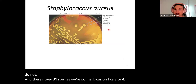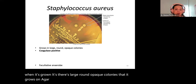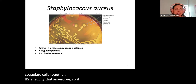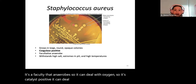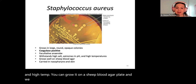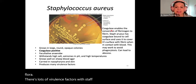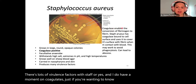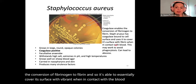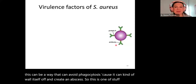Staph aureus is probably the most important staph species to know. When grown, it produces large, round, opaque colonies on agar plates. It is coagulase positive, meaning it can coagulate cells together. It's a facultative anaerobe, so it's catalase positive and can deal with oxygen, high salt, extremes of pH, and high temperature. We typically carry it on our skin and in our nasopharynx as normal flora. Coagulase allows conversion of fibrinogen to fibrin, covering its surface and enabling it to avoid phagocytosis by walling off and creating an abscess.